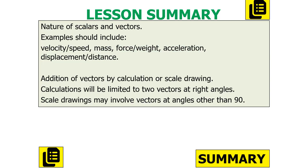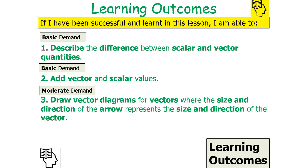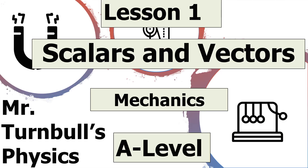To summarise today's lesson: we should understand the nature of scalars and vectors, know examples including velocity and speed, mass, force and weight, acceleration, and displacement and distance. We should be able to add vectors by calculation or by scale drawing — calculations are limited to two vectors at right angles, while scale drawings may involve vectors at angles other than 90 degrees. We should be able to describe the differences between scalars and vectors, add them, and draw vector diagrams where the size and direction of the arrow represents the size and direction of the vector. Thank you very much and have a lovely day.